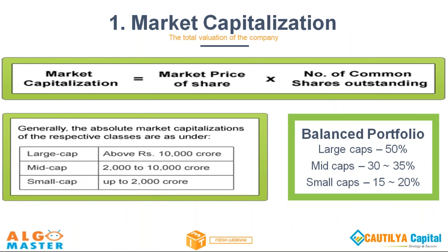The first and foremost concept is called market capitalization — in simple words, the total valuation of the company. It is simply calculated by the total number of shares floating for that particular company multiplied by the current latest market price of the share. You can go to the BSE or NSE site to check the last trading price. The total number of outstanding shares is also declared by the company on those websites.